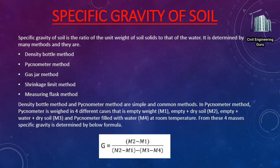The next type is specific gravity of soil. Specific gravity of soil is the ratio of the unit weight of soil solids to that of water. It is determined by many methods: density bottle method, pycnometer method, gas jar method, shrinkage limit method, and measuring flask method. The density bottle method and pycnometer method are the simplest and most common.